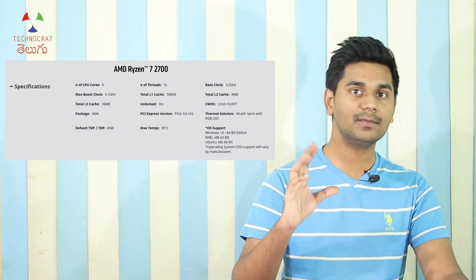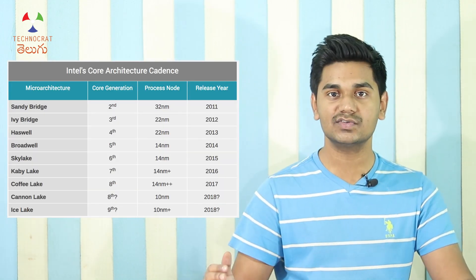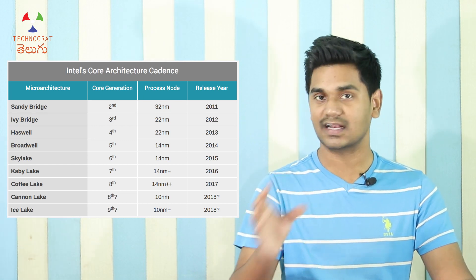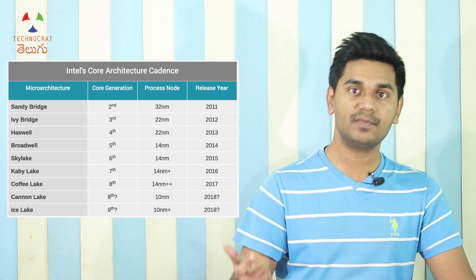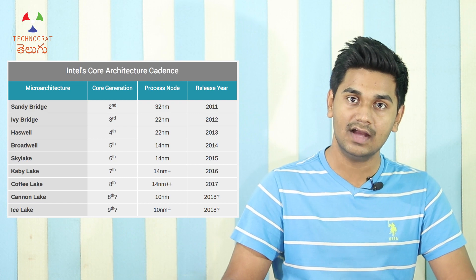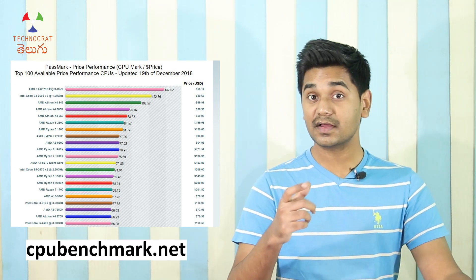AMD also provides detailed processor specifications on their website. You don't have to memorize everything, but you should know that an i3 of the latest generation can sometimes outperform an older i5 or i7. Intel processors span multiple generations — 4th, 5th, 7th, 8th — and generation matters. To compare performance across processors, you can use cpubenchmark.net to see benchmark scores and choose within your budget.